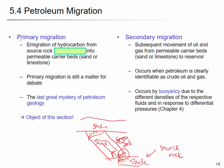But primary migration is still in debate. Geologists are still working on it, and there are many hypotheses but they have not been narrowed down to one or two. The mystery is: how and what happens to the hydrocarbon when it moves from the source rock — which is clay and shale — to the permeable carrier bed? That is the biggest mystery in petroleum geology.